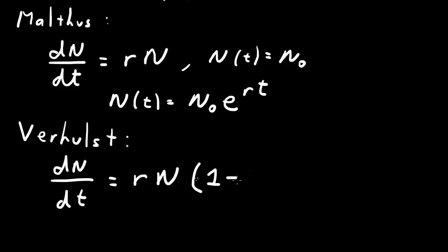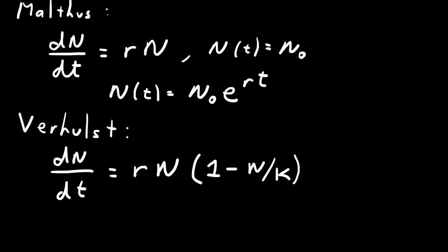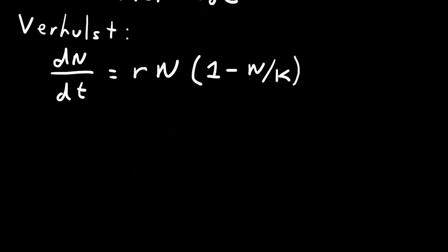But then we'll go to 0 when N grows up to a value of k, which is called the carrying capacity of the environment. This is the Verhulst equation. K is called the carrying capacity, so now dN/dt will be 0 when N equals k.